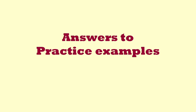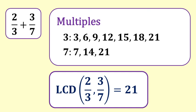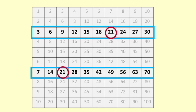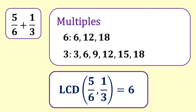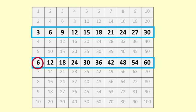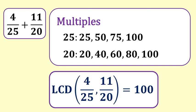Answers to practice examples. Two thirds and three sevenths: listing the multiples of three and seven, twenty-one is the lowest common denominator. Five sixths plus one third: six is the lowest common denominator. When one of the denominators is a multiple of the other denominator, that will be the lowest common denominator — six is a multiple of three, so the lowest common denominator is six. Four twenty-fifths plus eleven-twentieths: listing the multiples of twenty-five and twenty, the lowest common denominator is one hundred.